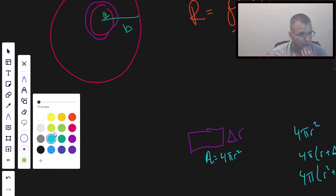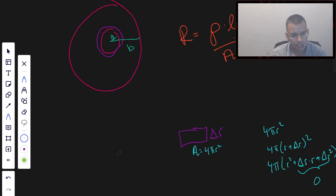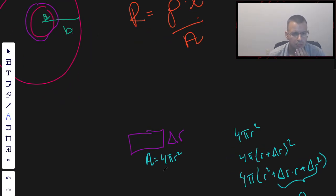All right, so now we're going to look at what rho is. That's area. This is length. Length is delta R.